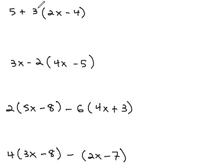Remember, we always distribute what's right in front of the parentheses. So in this problem, 5 plus 3 times the 2x minus 4, we'll want to distribute the 3 through the parentheses. We still have 5 plus 3 times 2x is 6x, and 3 times negative 4 is negative 12.